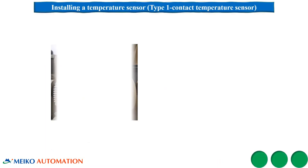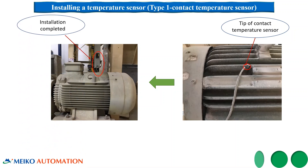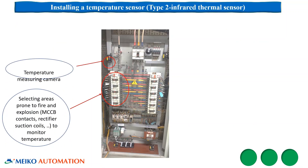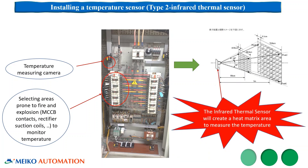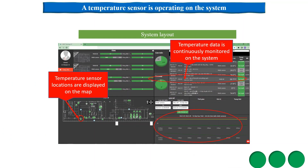Now we move on to the installation of sensors. Installing a temperature sensor — Type 1, contact temperature sensor: the contact tip will be placed on devices which require temperature measuring. Next, installing the infrared thermal sensor: for this type, install them at areas prone to fire and explosion. Installation should be conducted such that the temperature measuring area is in the heat matrix. After installation is complete, the temperature data will be continuously monitored on the system.